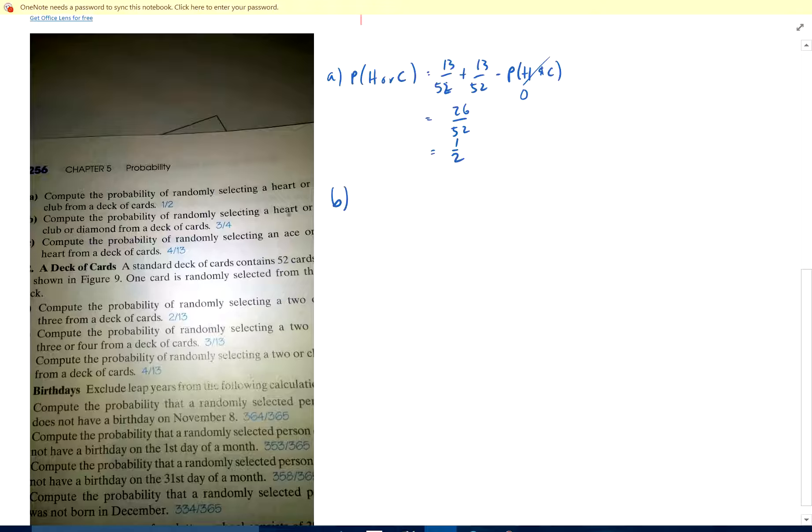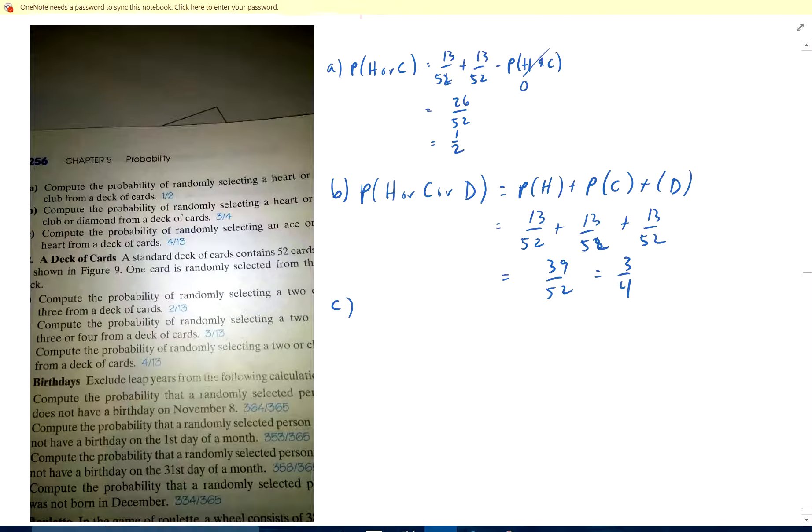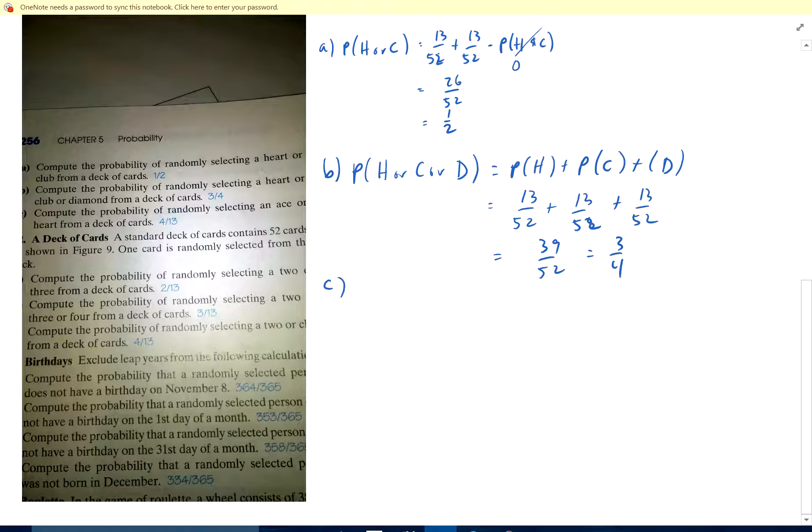I'll make it a little smaller so I can leave it all on the same page. Okay, part B. The probability of selecting a heart or a club or a diamond. Well, since these are all mutually exclusive, there's not going to be any overlap. So it's probability of a heart or a club or a diamond. I would subtract all the overlap, but there isn't any. So again, it's 13 over 52, 13 over 52, 13 over 52, which is 39 over 52, which is 3 fourths.